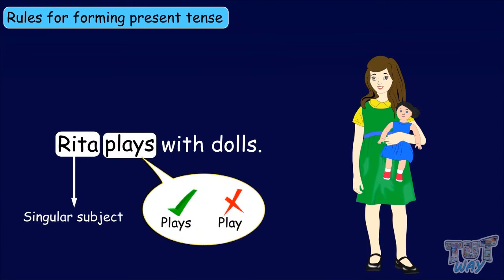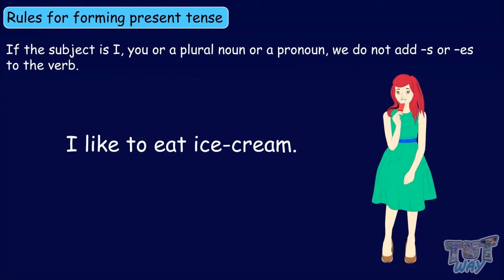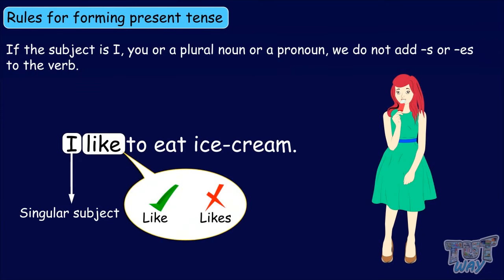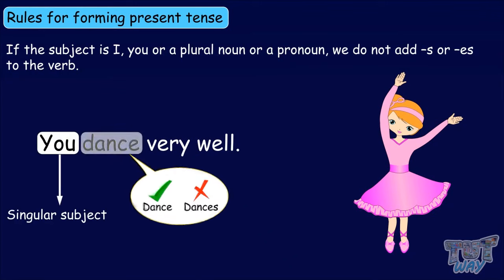So kids, we have learned that if the subject is 'I,' 'you,' or a plural noun or pronoun, we do not add 's' or 'es' to the verb. For example: 'I like to eat ice cream.' The subject is 'I,' so we have used 'like' and not 'likes.' 'You dance very well.' Since the subject is 'you,' we do not add 's' or 'es' to the verb, so we have used 'dance' and not 'dances.'